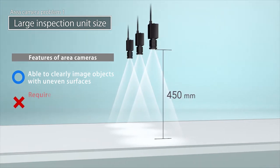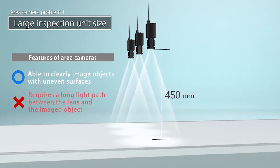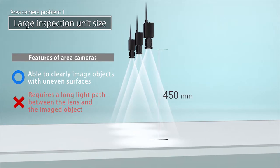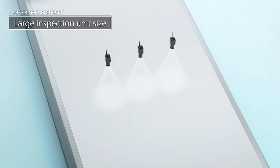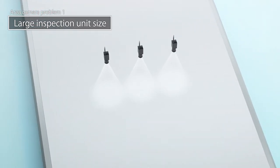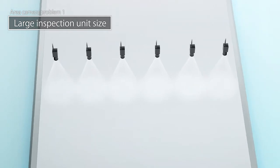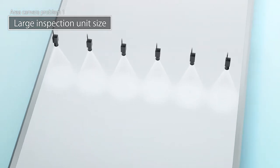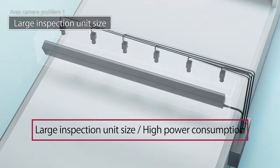However, they require a long light path between the lens and the scanned object. Because of this, scanning long objects requires multiple cameras to be arranged in a line, making inspection units larger and consuming more power.